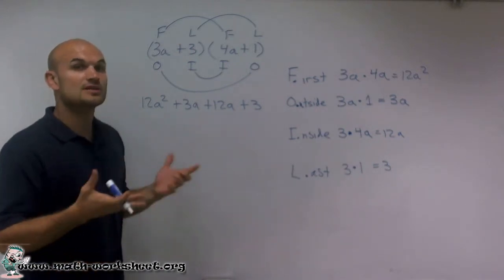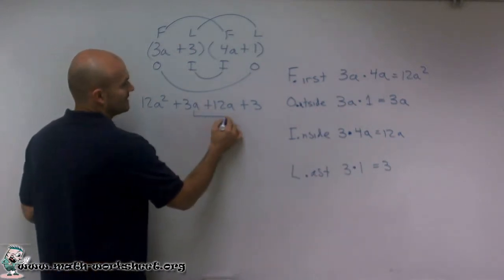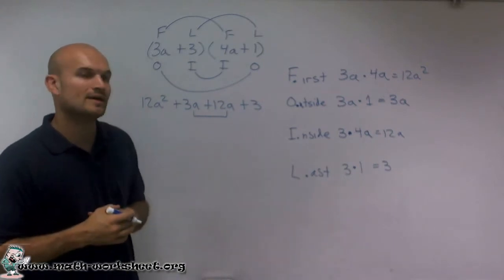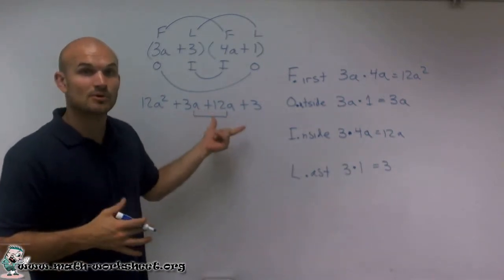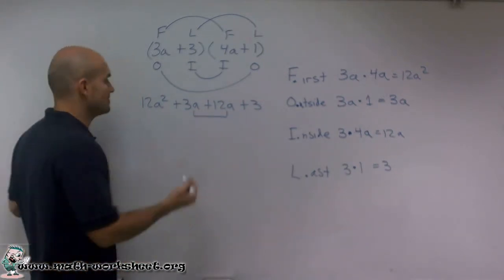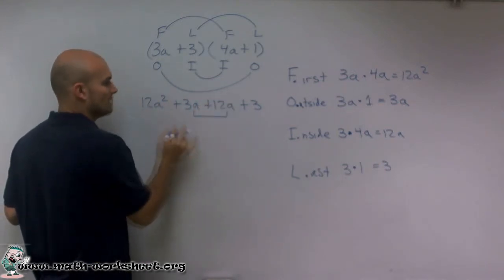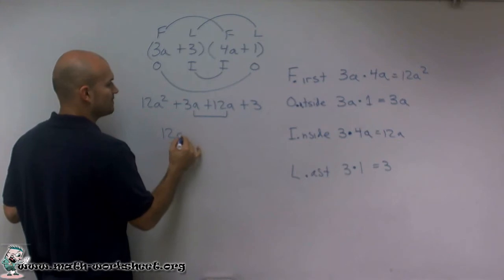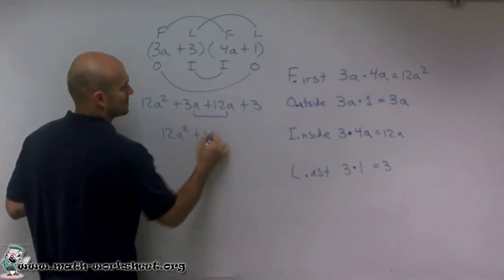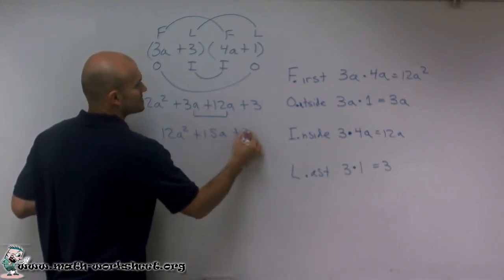So now, what I want to do is combine like terms. I notice that these two inner terms both have the same base and exponent, so I can combine them. They're the same term. So 12a squared plus—or I'm sorry, 3a plus 12a—is going to give me 15a plus 3.